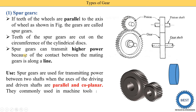Spur gears are used for transmitting power between two shafts when the axis of the driving and driven shafts are parallel and coplanar. As seen in the diagram, the axis of both the driving gear and driven gear are parallel to each other. They are commonly used in machine tools and automobile gearboxes. In a gearbox, the gears are spur gears, and they are also used in various machine tools like lathe machine, milling machine, and shaper machine.